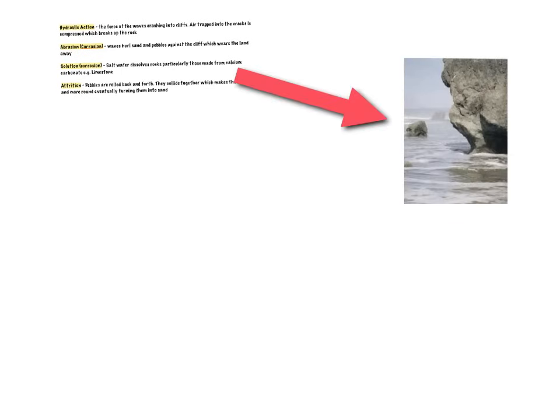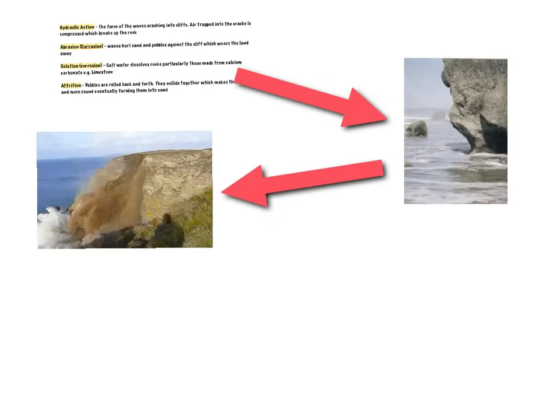So, to recap, the important points to remember in the formation of a wavecut platform are firstly, the types of erosion, how these types of erosion lead to the formation of a wavecut notch, how the increased size of the wavecut notch eventually leads to the collapse of the overhang due to the force of gravity, and the retreating of the cliffs, which leads to the formation of a wavecut platform, which is visible at low tides.